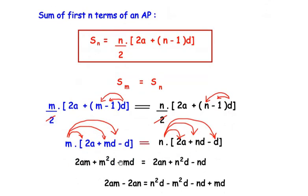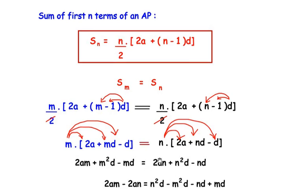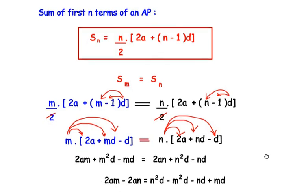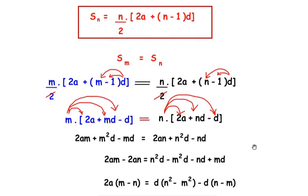We write 2Am and bring negative 2An to the left hand side. Moving all D terms to the right hand side: n squared D stays, m squared D becomes minus m squared D, minus nD stays, and minus mD becomes plus mD. On the left hand side, 2A is a common factor, so we take it out, leaving M minus N inside the bracket.